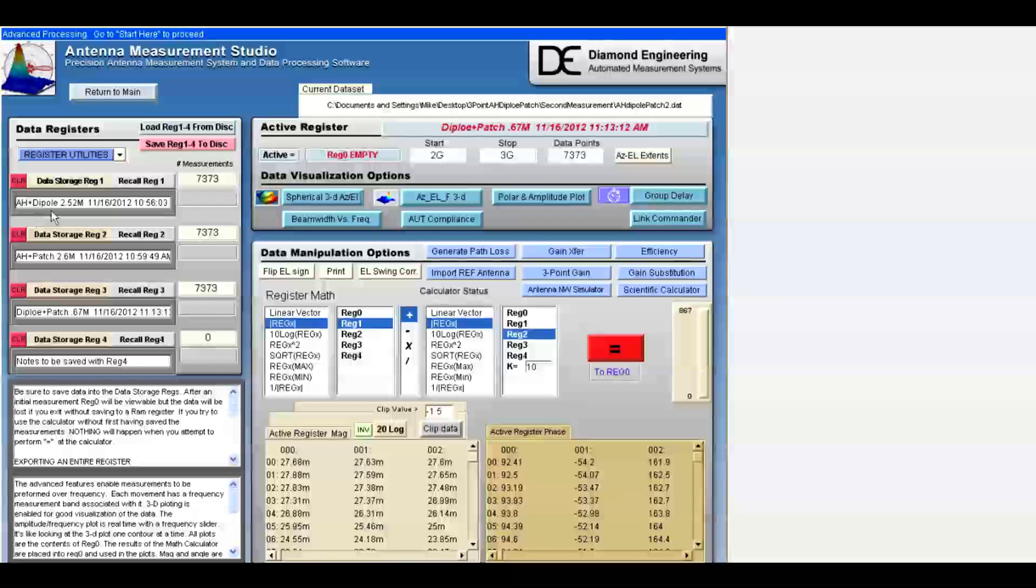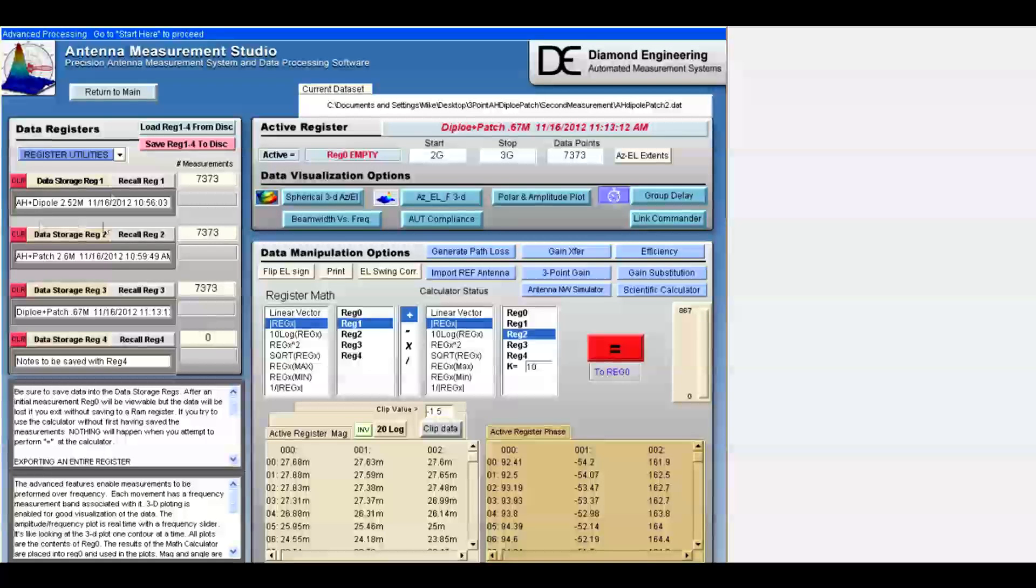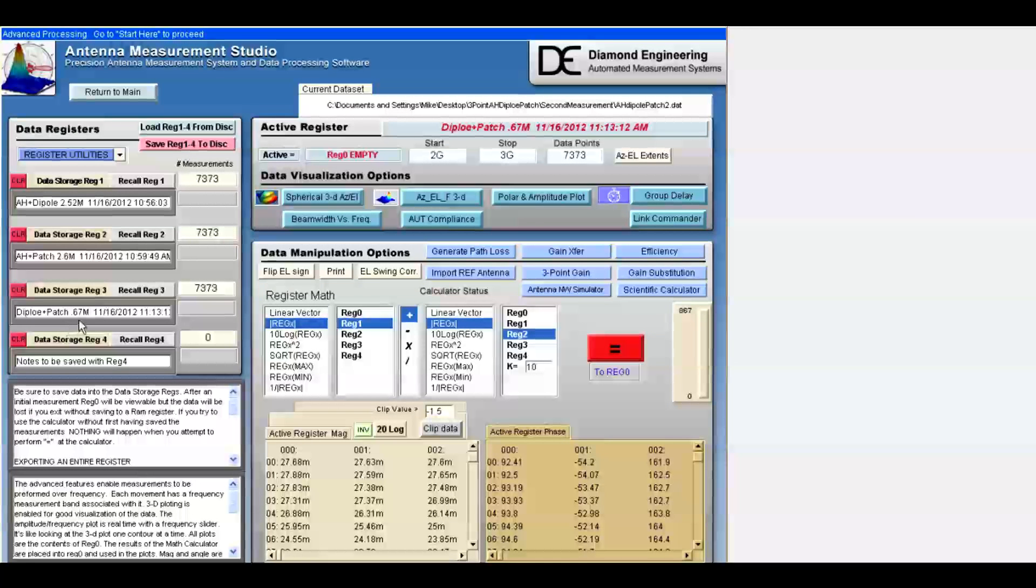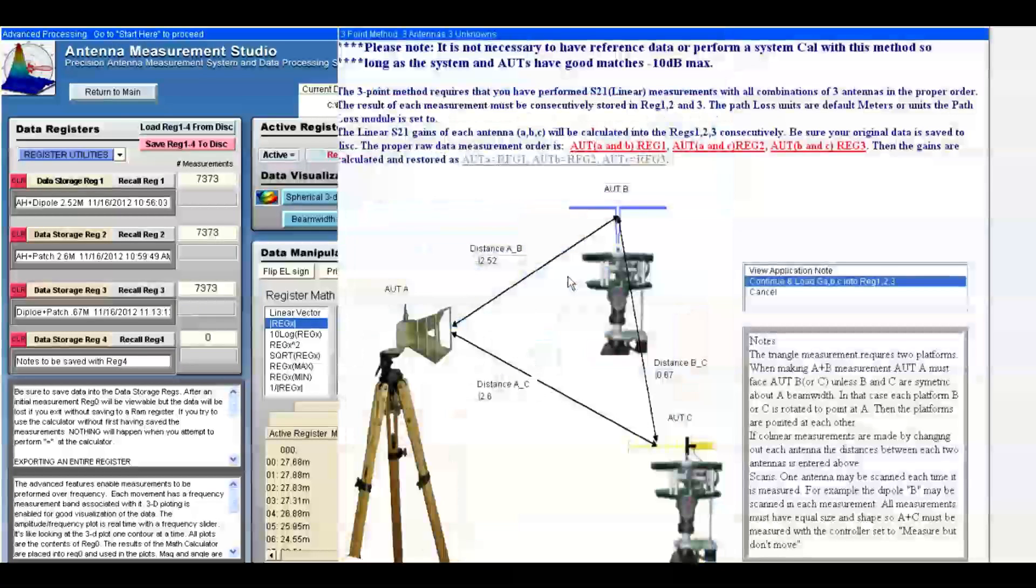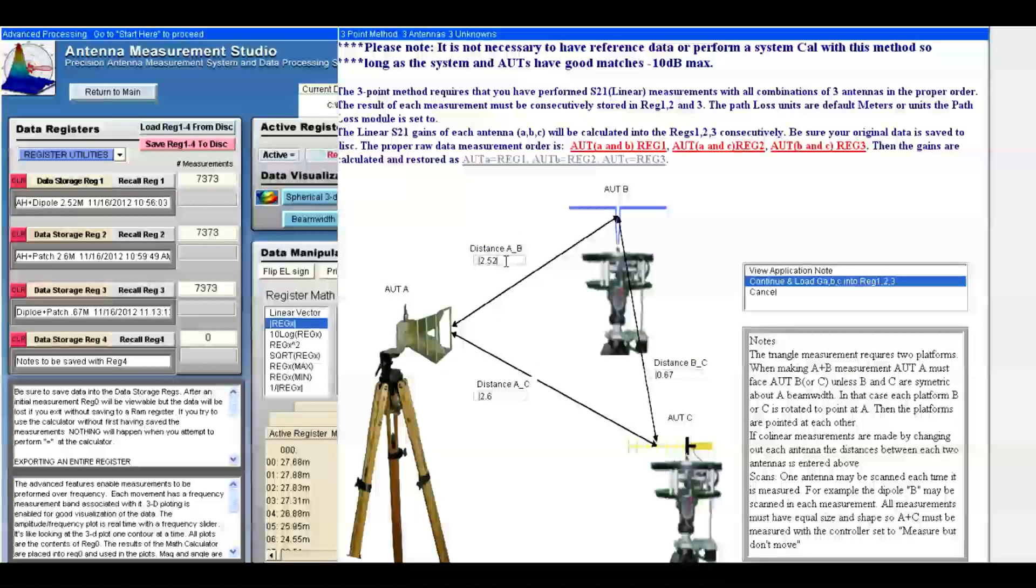In register two, we've stored the horn and the patch data with a distance of 2.6 meters. In register three, we've stored the dipole and the patch data with a distance of 0.67 meters. Next, we're going to employ the three-point gain module with the proper distances entered.